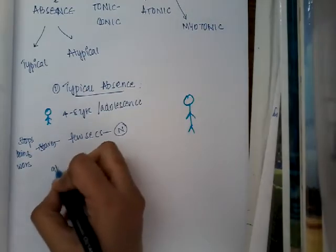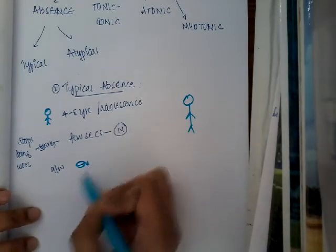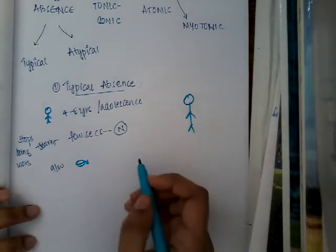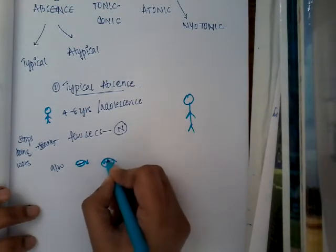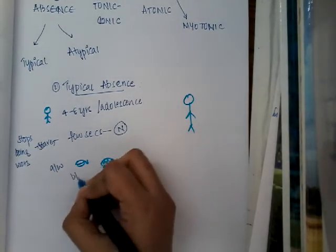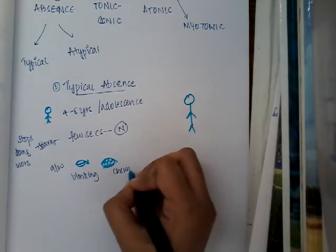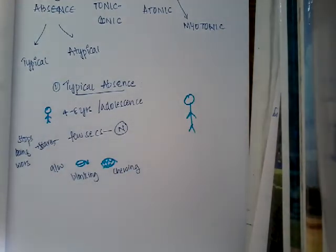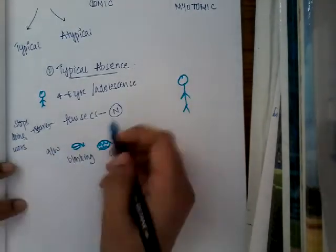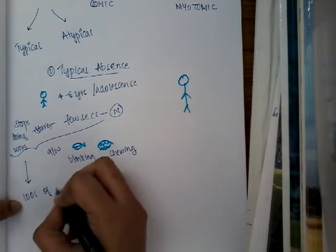Here it is sometimes associated with some episodes of blinking. Okay. Or sometimes the person may chew, chew food. He may blink or chew food. Sometimes these are also seen, associated with blinking or chewing food. Okay. These are some motor signs. These can occur hundreds of episodes, hundreds of episodes, not just one episode. These episodes, these all can occur hundreds of episodes per day.